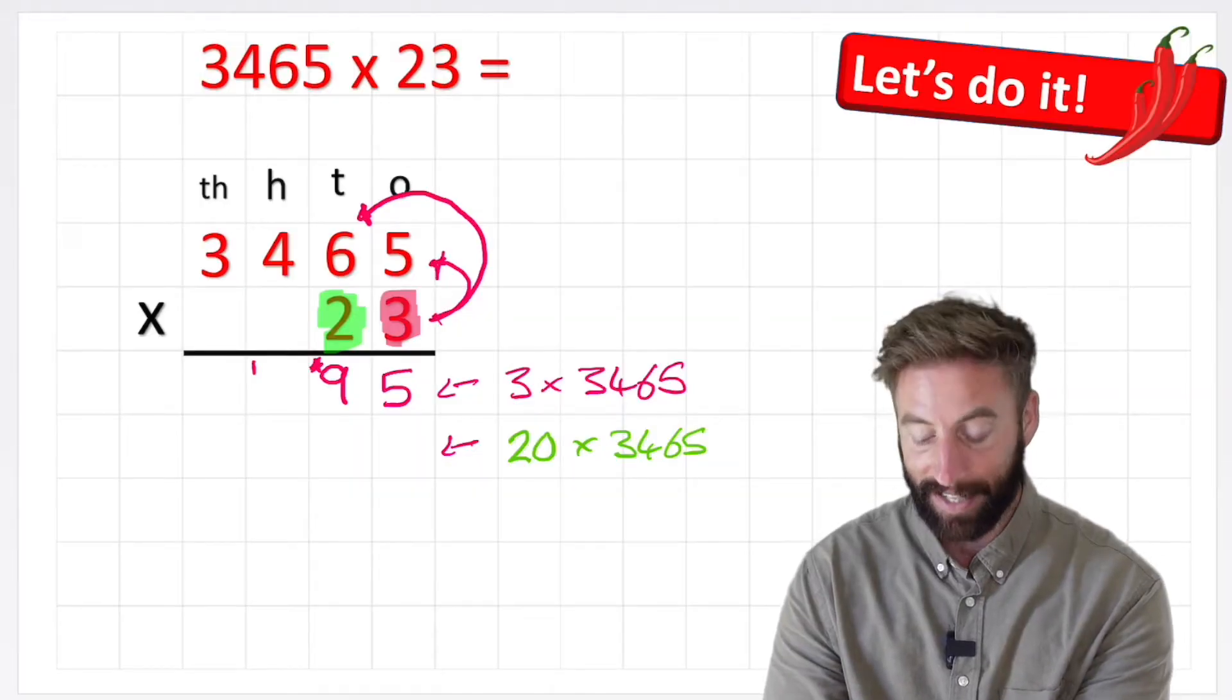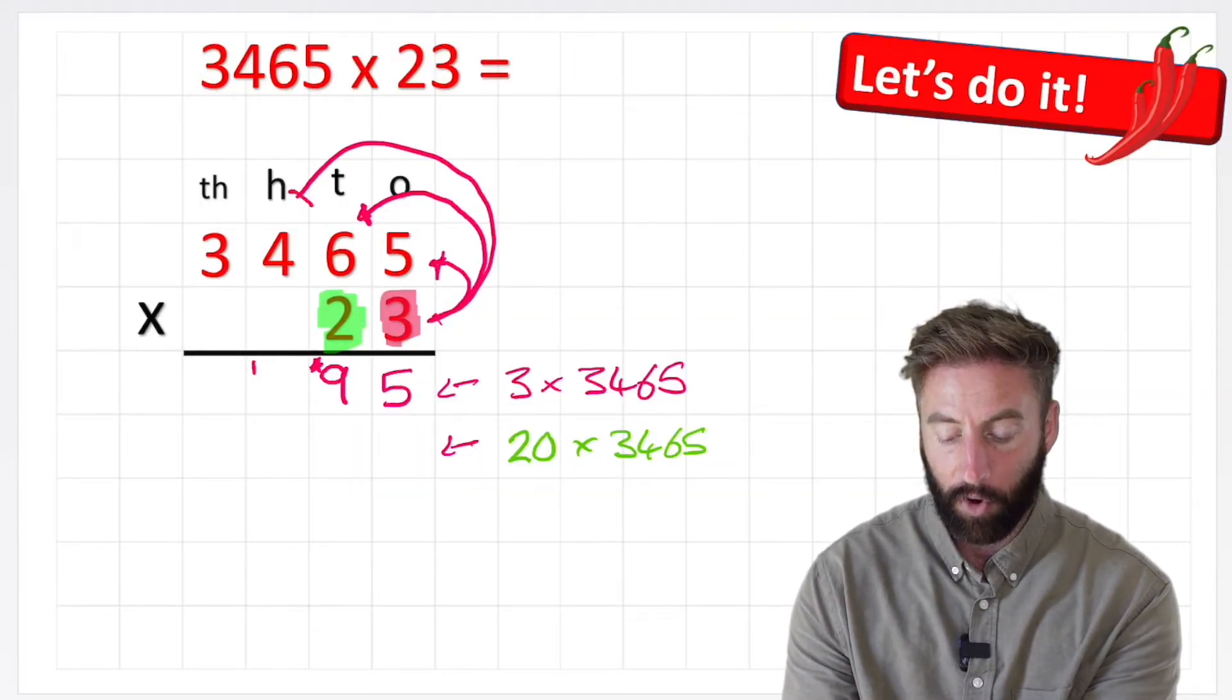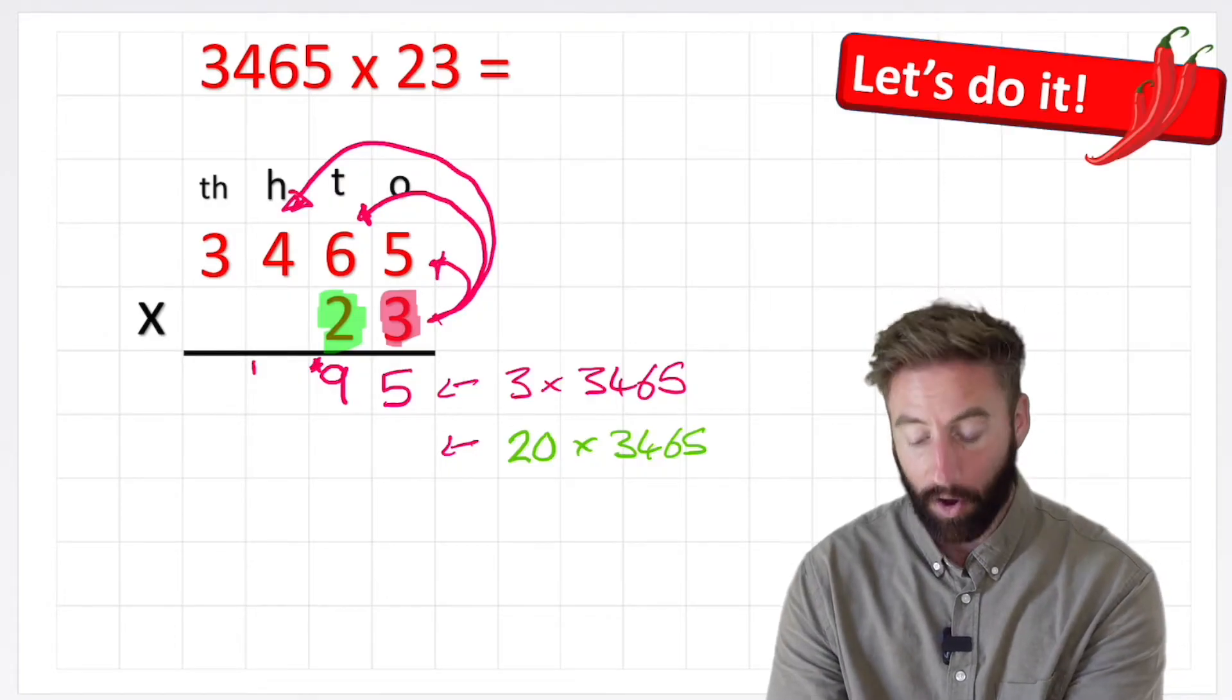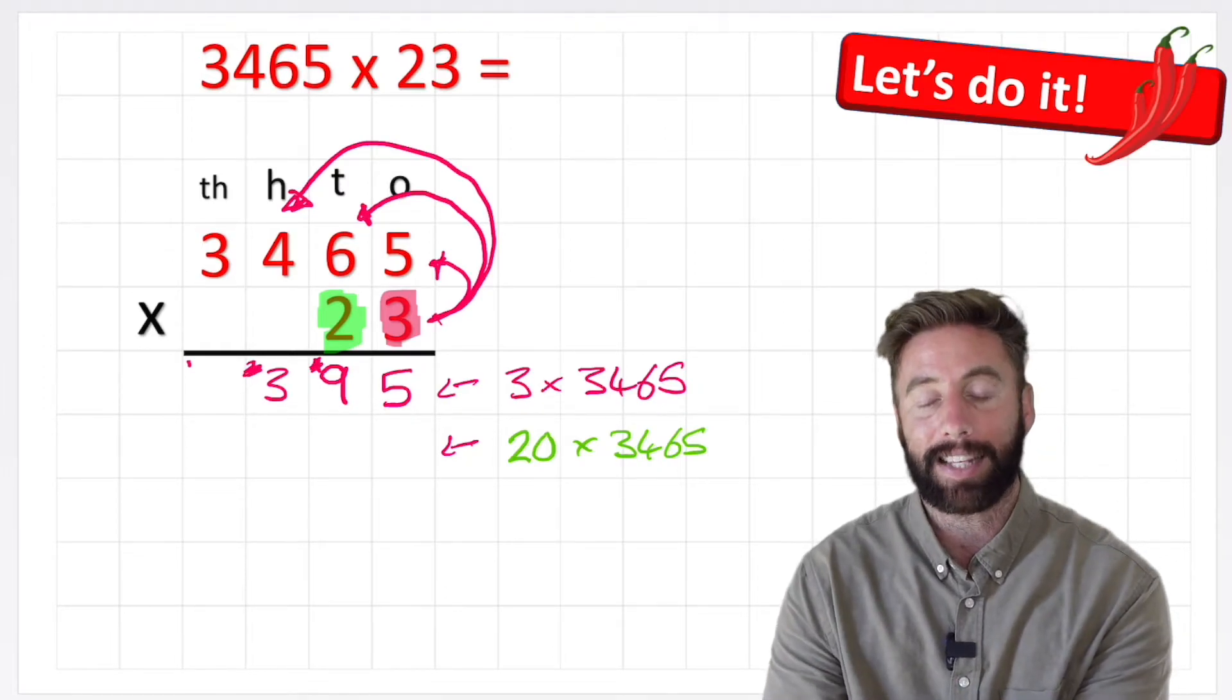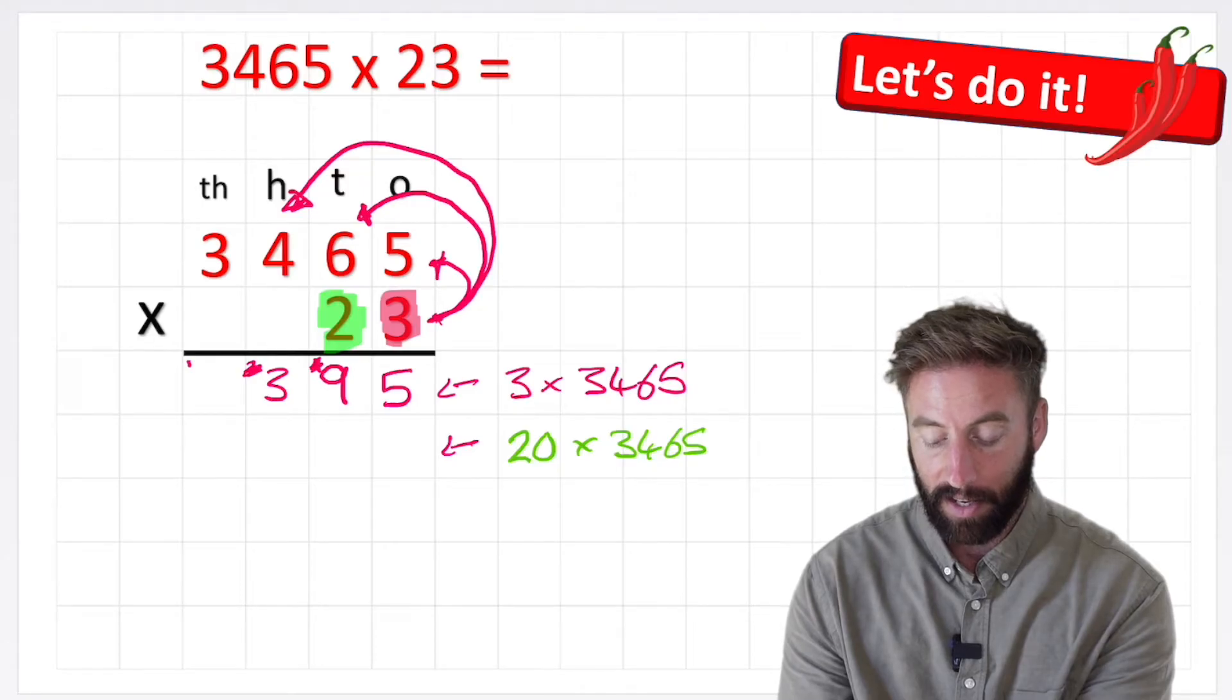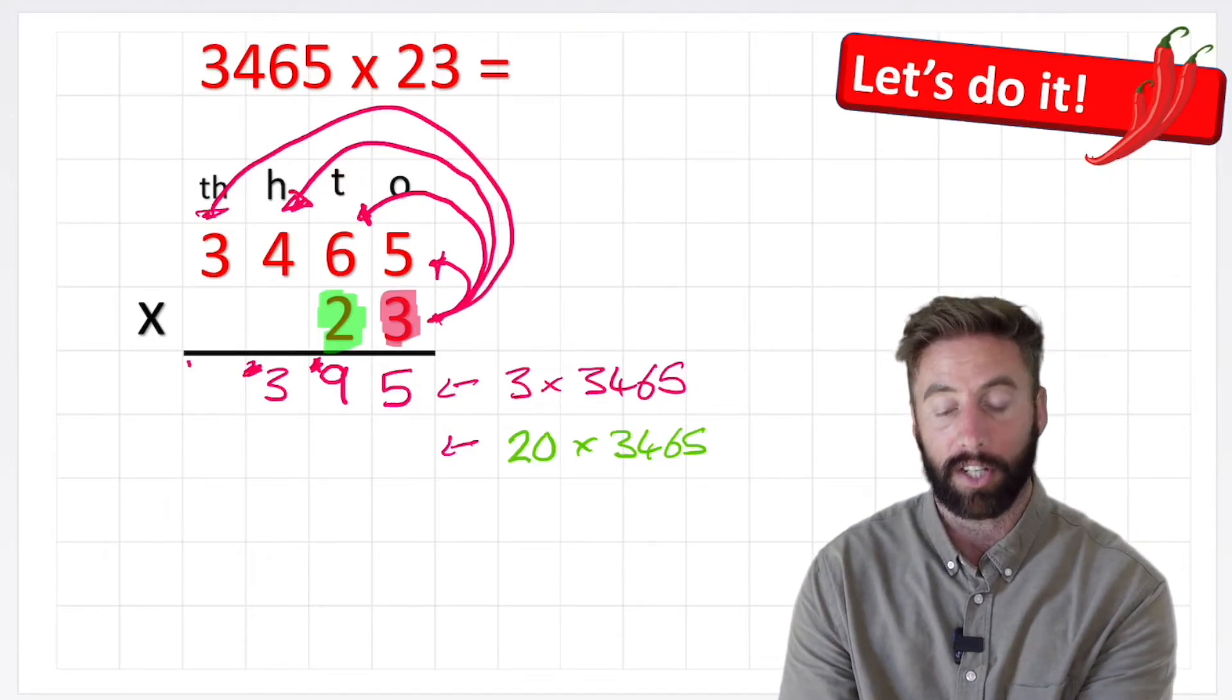Top tip: scrub out that 1 that we've just used so that we don't add it up by mistake later. Now I can do my hundreds column which is 3 times 4. And 3 times 4 is 12, plus my 1, 13. Same thing again: small 1, big 3, scrub out the 1.